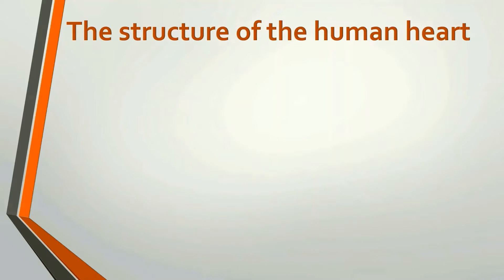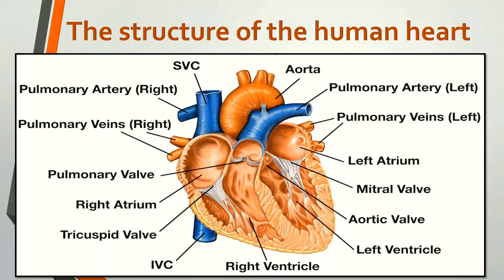First, we should discuss about the structure of the heart. The heart has four chambers: the upper part called atria and the lower called ventricles. These are the left and right atriums and these are the left and right ventricles. There are two valves between these atriums and ventricles: the bicuspid valve located between the left atrium and left ventricle, and the tricuspid valve located between the right atrium and right ventricle.